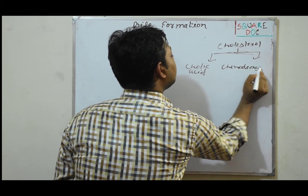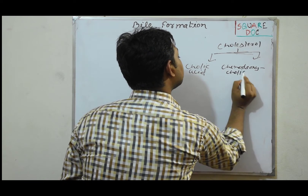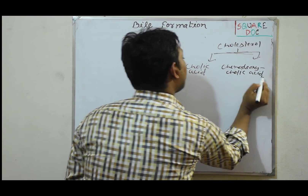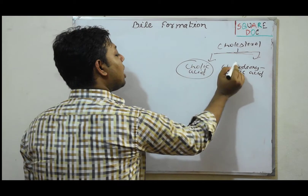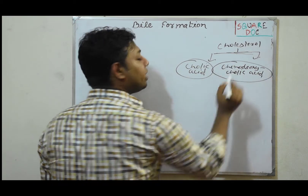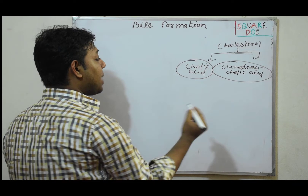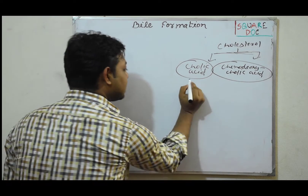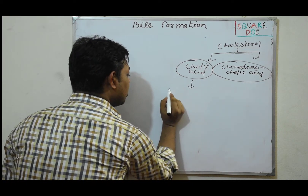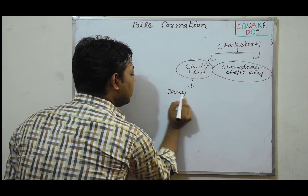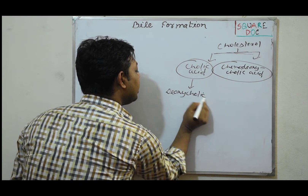Cholesterol is converted into colic acid. One is colic acid and the other is deoxycholic acid — these are the primary bile acids.